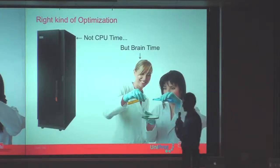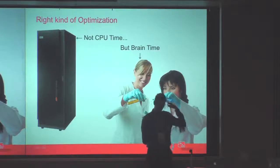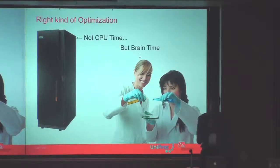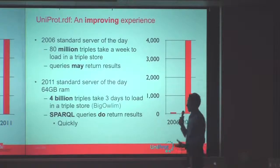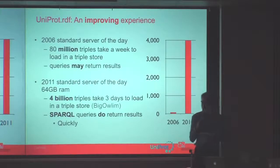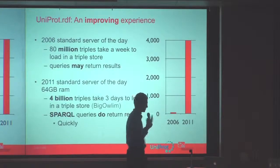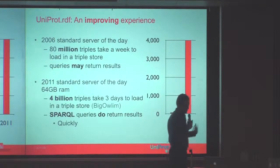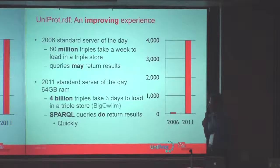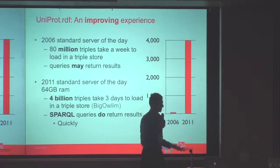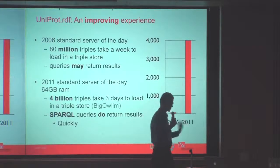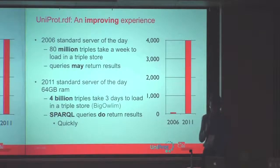We've always been very busy as programmers to optimize CPU time, but we really need to make sure that the biology spring time is optimized, because those are more expensive these days than CPUs. RDF has been around for a while. In 2006, when we started experimenting internally, we had 18 million triples — and that was a lot. It took a week to load, and we were very happy if a query returned correct results. These days it's a little bit different: we now have 4 billion triples, it takes three days to load, and SPARQL queries return actually very fast. The RDF world has become practical to use even for large databases.